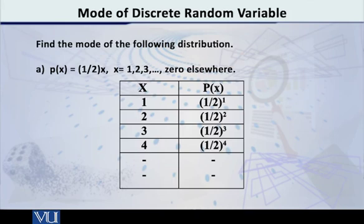If we want to make our life simple, we can just say, simply by inspection, the first value of X can be regarded as the mode. Because of that reason, that probability against this particular X value is the maximum as compared with all the other probabilities.